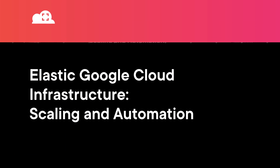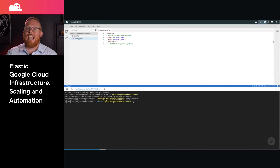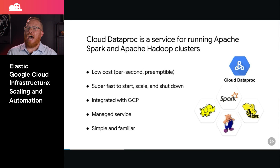For this month's featured learning resources, I have three completely different types of resources. First up, there is a new video course in the Pluralsight content library that covers an essential skill when working in GCP: scaling. This course will walk you through foundational concepts like cloud VPN peering and managed instance groups, then review how you can leverage HTTP load balancing and auto-scaling to create elastic infrastructure. You'll also learn how to automate this infrastructure using Deployment Manager and Terraform.